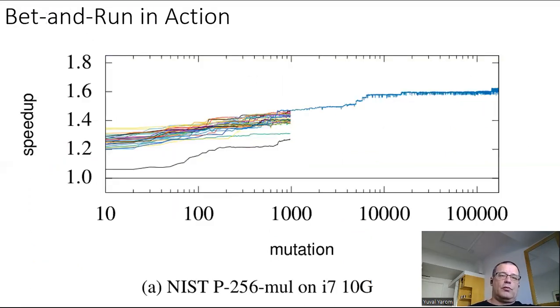Cryptopt uses what's called the best bet-and-run strategy. So we allocate some of the budget of our mutations to a best stage where we run multiple optimizations. Each of them gives us a different result. When we finish this budget for some time, each of these random searches, we pick the best one and continue to try to improve it for the rest of our budget.